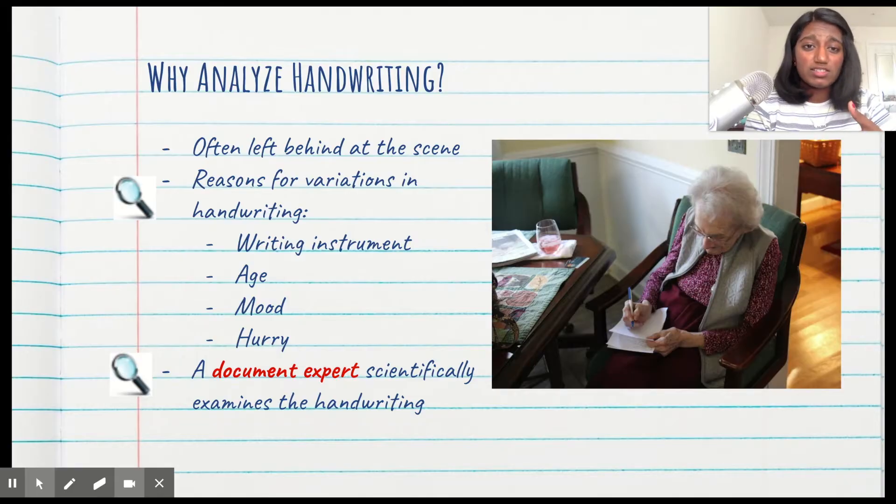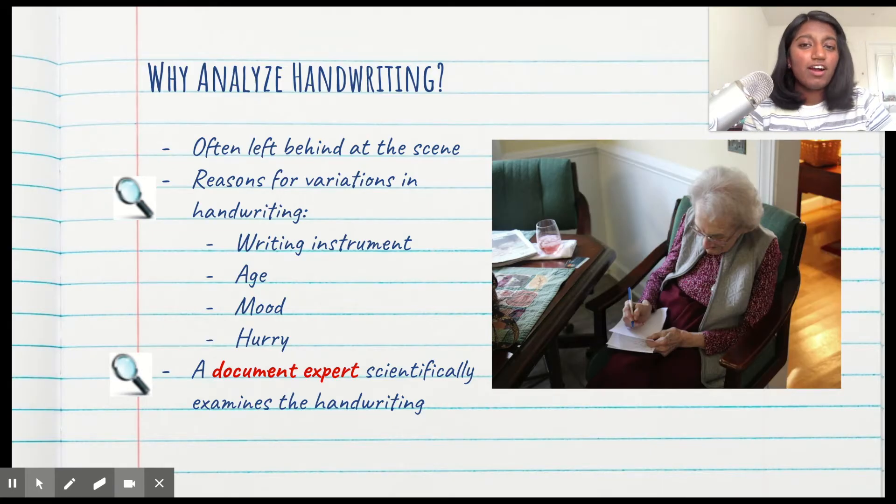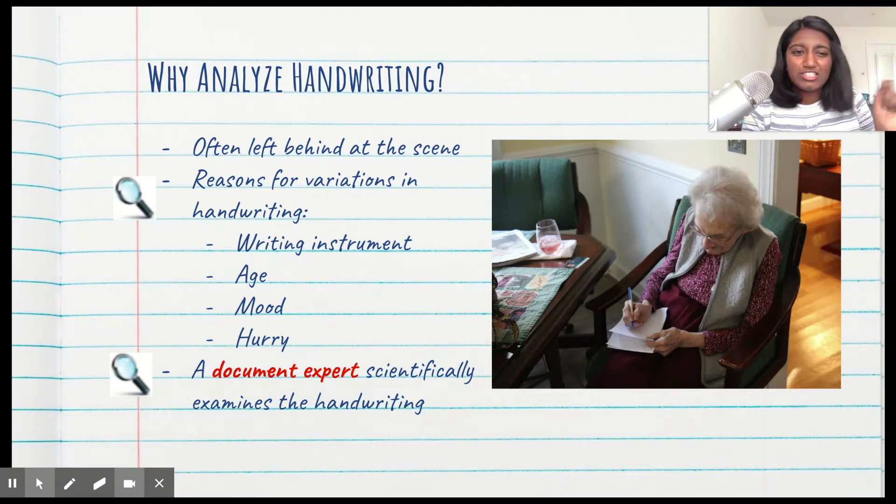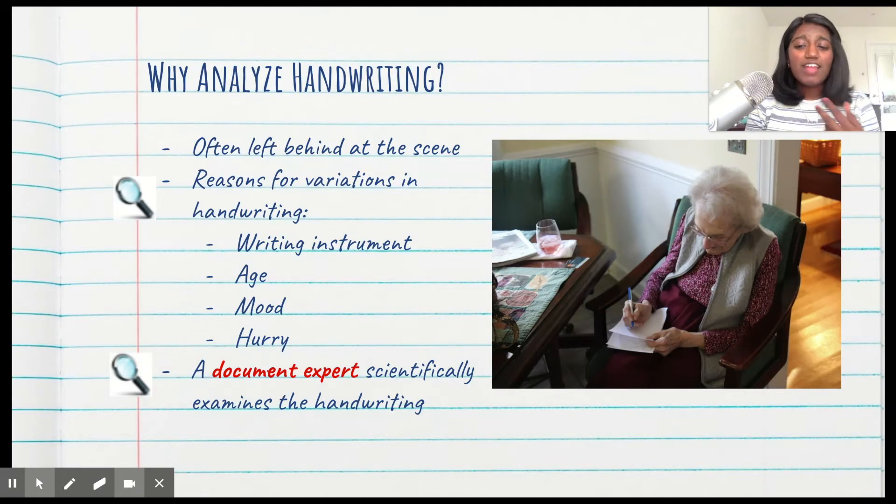And finally, one of the more obvious ones: when you're in a hurry. This can tell us more about the situation that was happening at the scene. When you're in a hurry, your handwriting is obviously more messy. When you're at the end of a test writing furiously to finish versus at the beginning thinking about your opinion being very slow, it can contribute to variations in handwriting.